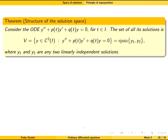Another theorem tells us the following: suppose we have any two linearly independent solutions of a second-order homogeneous linear differential equation. Then the set of all solutions can be constructed as the span of these two solutions — in other words, the general solution can be written in the form c1·y1 plus c2·y2.